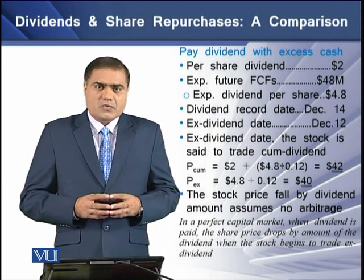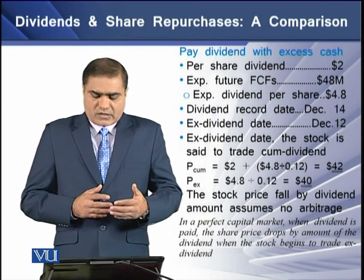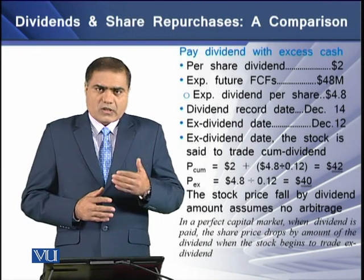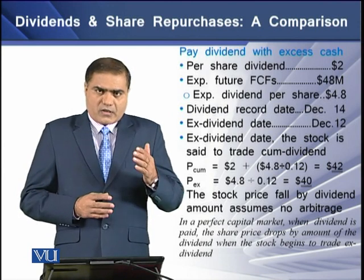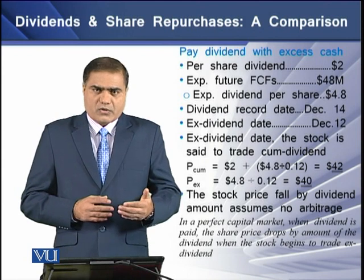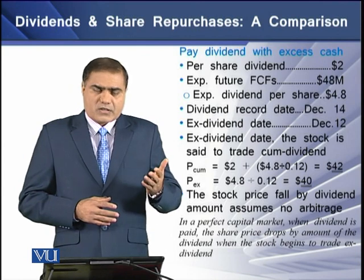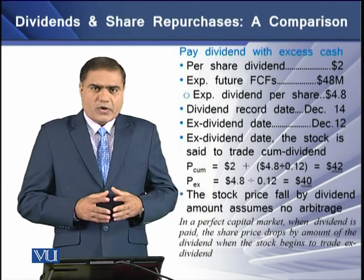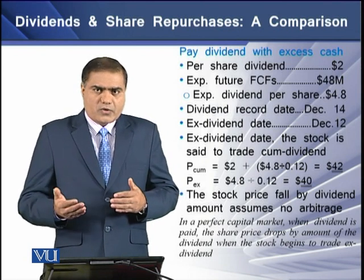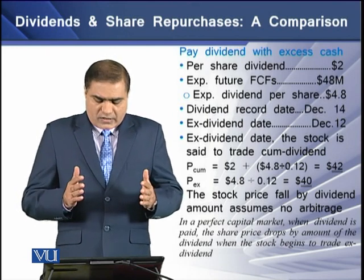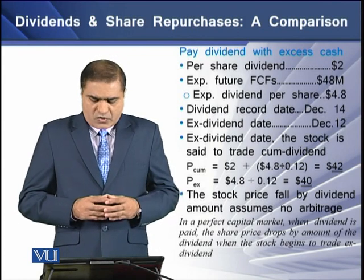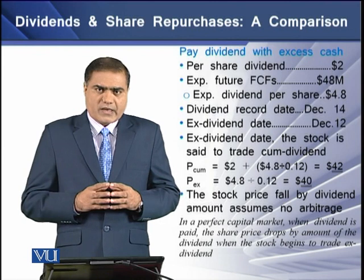The expected future dividend per share is $4.80. Assuming the dividend record date is December 14, the ex-dividend date is December 12. Before the ex-dividend date, the stock trades cum-dividend at $42 per share; after, the ex-dividend price is $40 per share. There is a decrease of $2, showing that in a perfect capital market, the share price drops by the amount of the dividend paid when the stock begins trading ex-dividend.